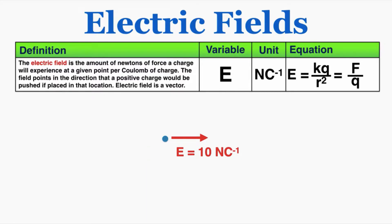The variable is capital E and the unit is newtons per coulomb — N times C to the negative 1 means newtons over coulombs — because it's a measurement of how many newtons of force an object will experience based on how many coulombs of charge that object has. There are two equations: E equals k times the charge creating the field over r squared, or E equals the force a charge experiences divided by the charge experiencing the field.